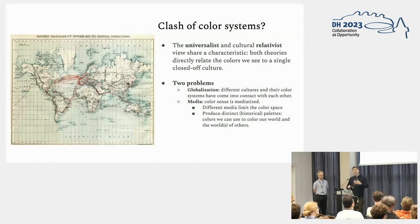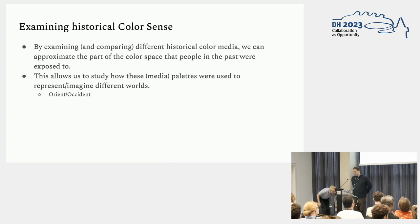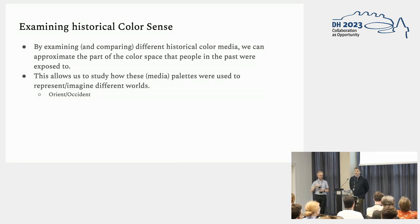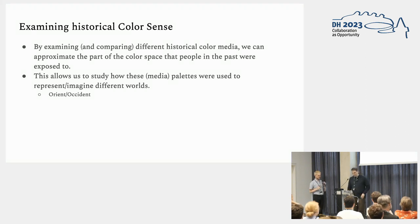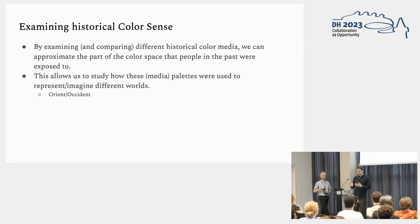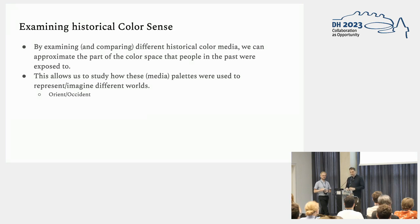The colors we can see can then be mapped into distinct color curves. What we hope to do is, by examining and comparing different historical color media, approximate the part of the color space that people in the past were exposed to. By doing this, we can also study how these different media palettes were used to represent or imagine different worlds — specifically focusing on the Orient and the Occident.